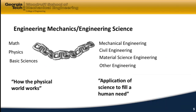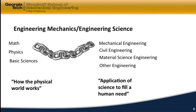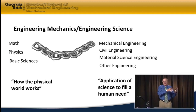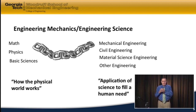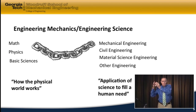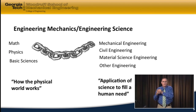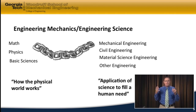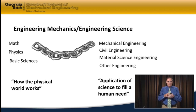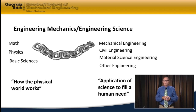So what is engineering mechanics? This is an introduction to engineering mechanics, or engineering science. Engineering mechanics takes the basic sciences — the physics, the math, the things about how the physical world works — and it's the linkage, sometimes called engineering sciences, to the engineering disciplines of mechanical engineering, civil engineering, material science engineering, and all kinds of other engineering, where we try to fulfill a human need by applying the science that we learned before.